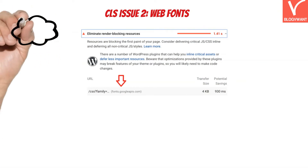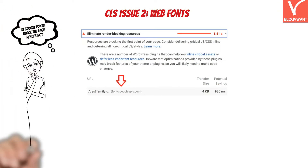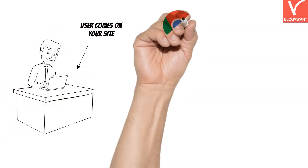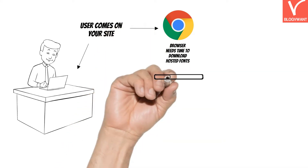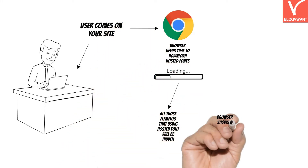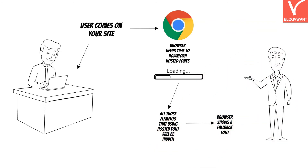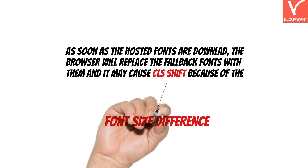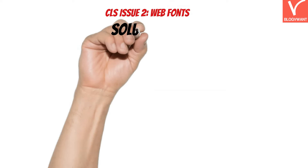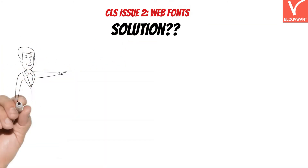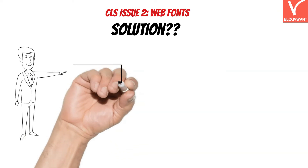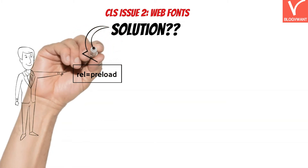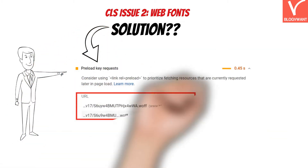If your site is using fonts hosted from another site, for example Google Fonts, this might be impacting the CLS score. Whenever someone opens your website, the browser takes time to download that font from the server. During this time, all elements using the hosted font will be hidden, and the browser shows a fallback font defined in a CSS file. As soon as the hosted fonts are downloaded, the browser replaces the fallback fonts with them, which may cause a CLS shift due to font size differences. The solution is simple: by applying the rel="preload" attribute, you can force browsers to download such fonts as a priority.